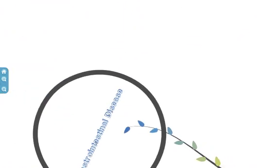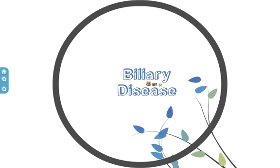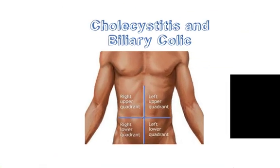If a patient has pain in the right upper quadrant or epigastrium, liver, biliary and pancreatic pathology should be considered within the differential. Cholecystitis and biliary colic both present with constant right upper quadrant pain, which can refer to the right shoulder tip and even to the chest. The main difference between the two is that cholecystitis has an inflammatory component. The pain is often exacerbated by fatty foods, and vomiting or nausea may be present. The following video shows how to elicit Murphy's sign, a sign of an inflamed gallbladder, such as may be seen in cholecystitis.